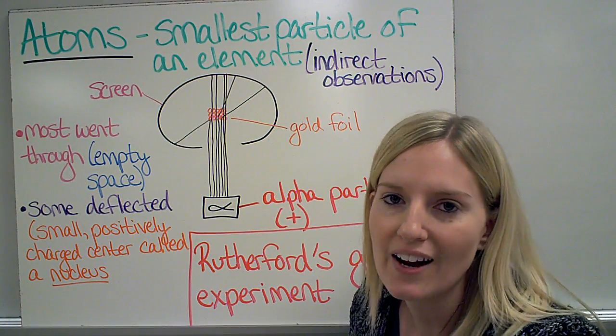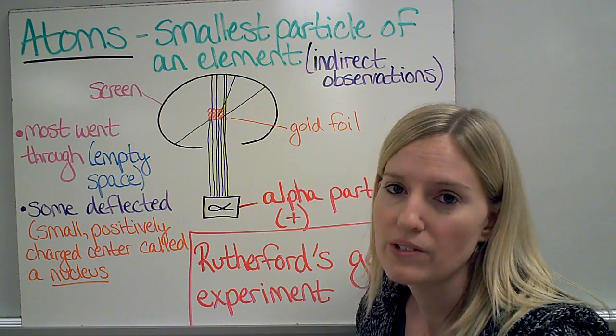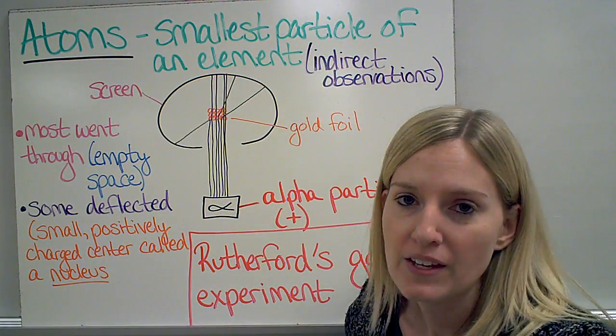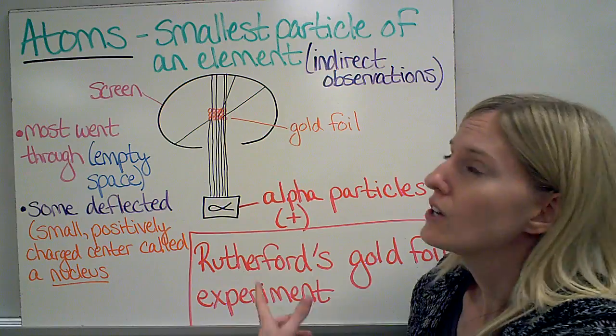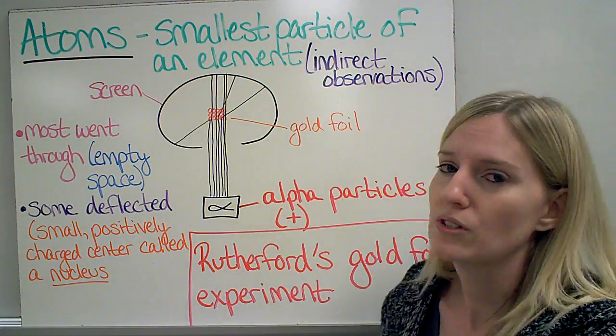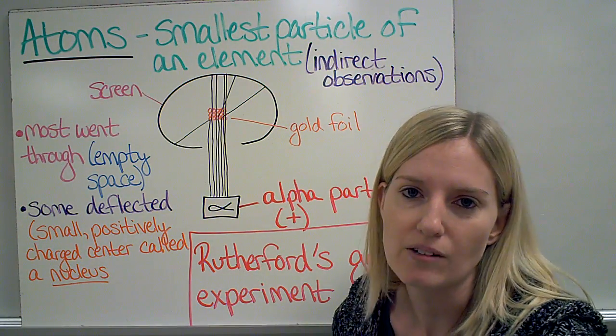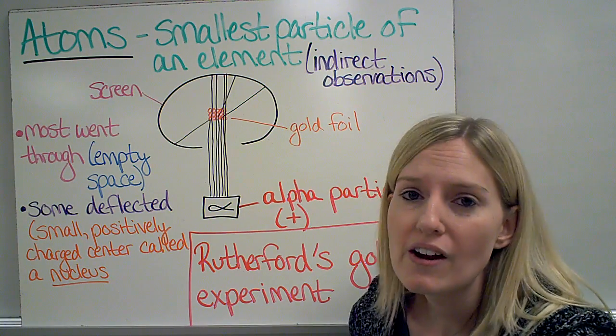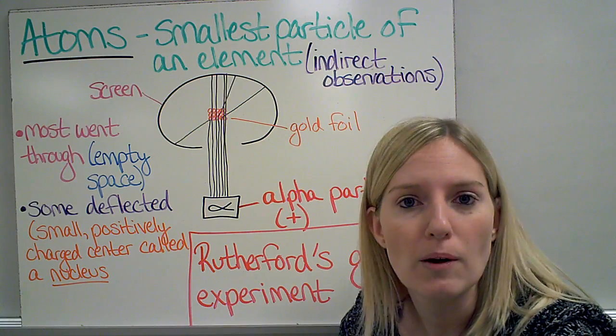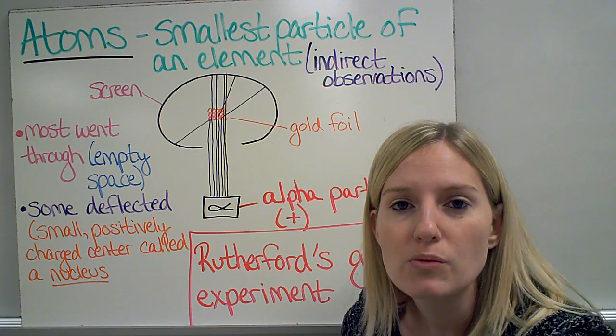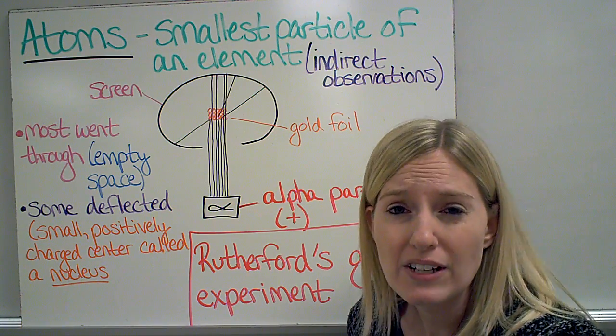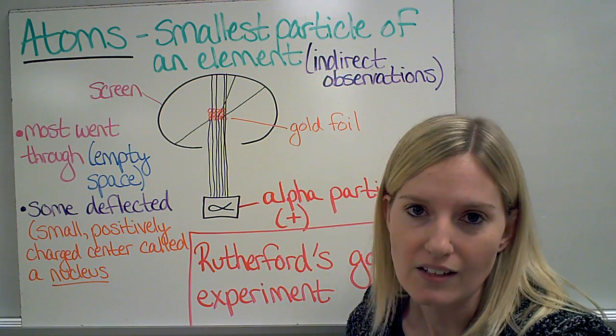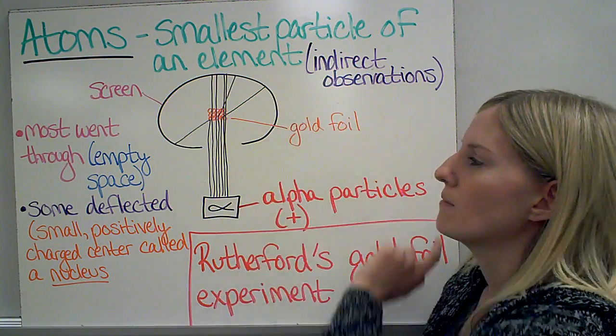Today we're going to expand our knowledge on atoms. We already know that atoms are the smallest particle of an element, and we know this through indirect observation. We can't see atoms, they're extremely small, but we know that they are there and we know how they behave and what makes up atoms because we have done experiments where we haven't actually seen them, but we can see how atoms affect things. We call those indirect observations.